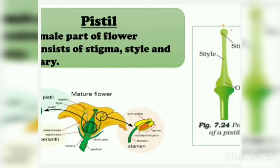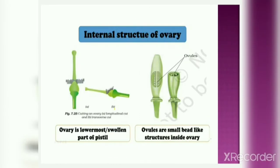Anther produces pollen grains. Next is pistil. Pistil is the female part of flower. It consists of stigma, style, and ovary. You can see in figure 7.24 the pistil and its parts. Now let's see the ovary. Ovary is the lowermost or swollen part of pistil. If you cut open this ovary, you will notice that there are small bead-like structures inside the ovary. These small bead-like structures inside ovary are called ovules, as shown in the figure. Pistil is the female reproductive part and it consists of stigma, style, and ovary.